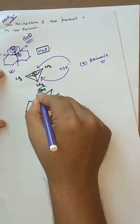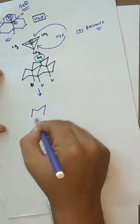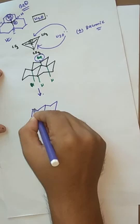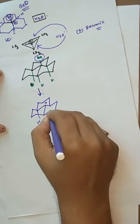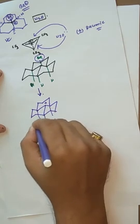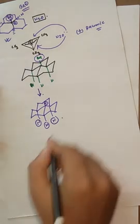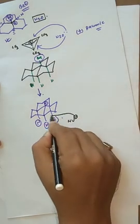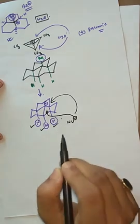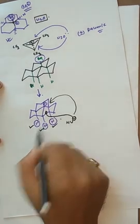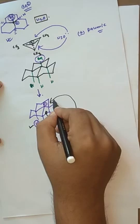The bromine atom is liberated as Br⁻ and a 3° carbocation is generated. Then nucleophilic attack occurs. The nucleophile can attack from below the plane or above the plane. However, it is observed that there are three hydrogen atoms blocking the bottom face, so the possibility of attack from below the plane is very difficult, whereas nucleophilic attack from above the plane is much more prominent.